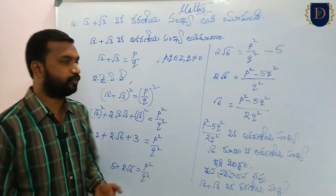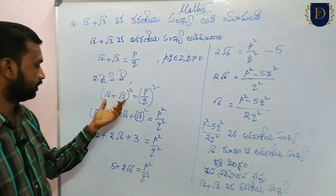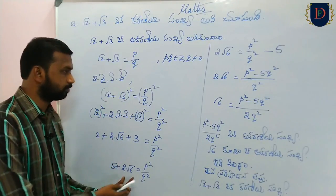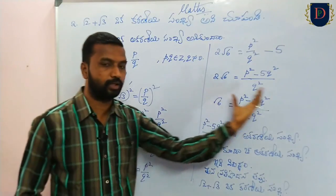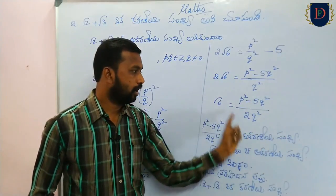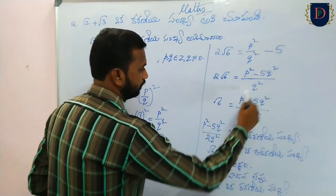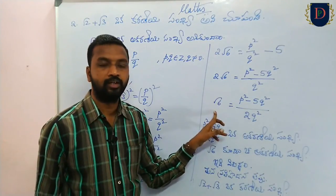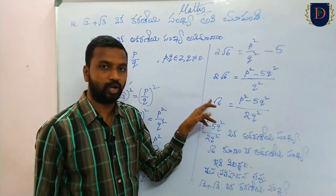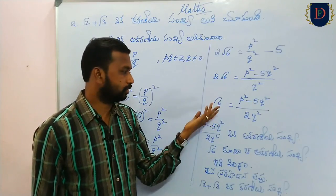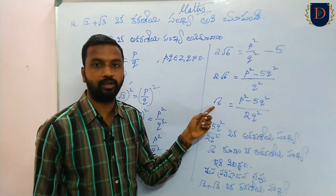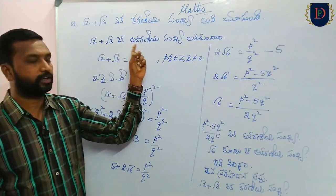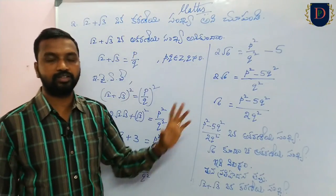Similarly, if we have the proof for root 3 plus root 5, we will get 2 root 15, which should be a rational number - leading to the same contradiction. This is the method we follow.